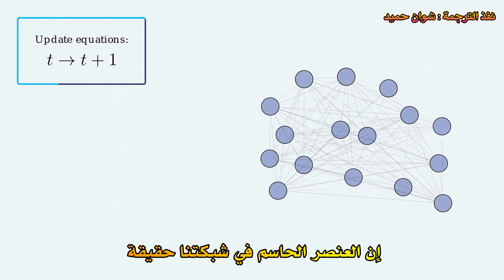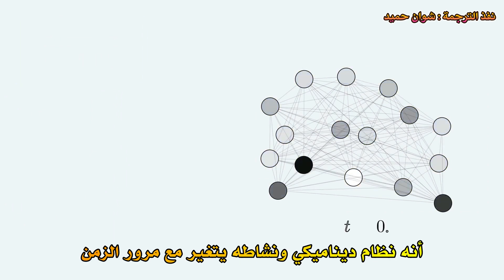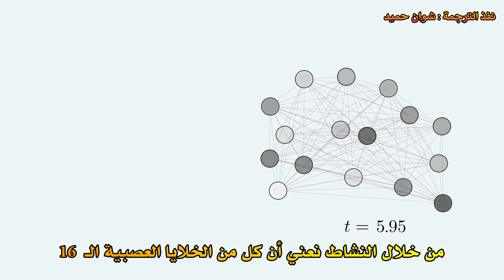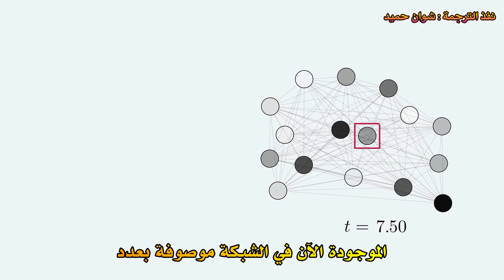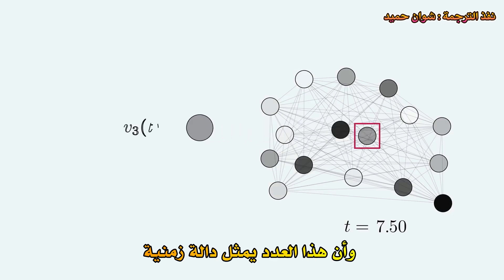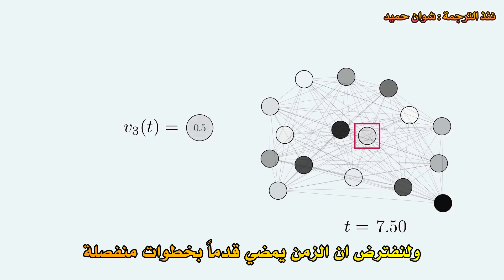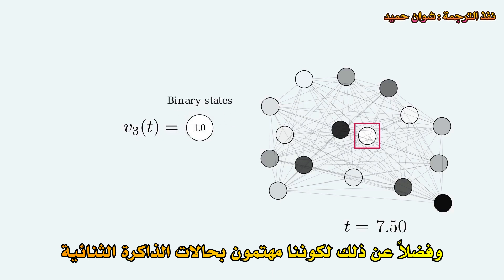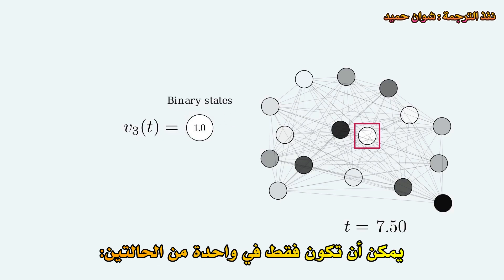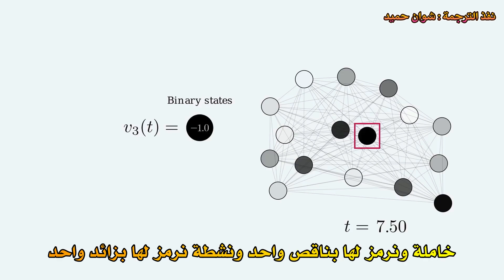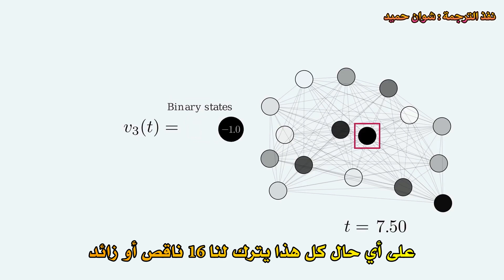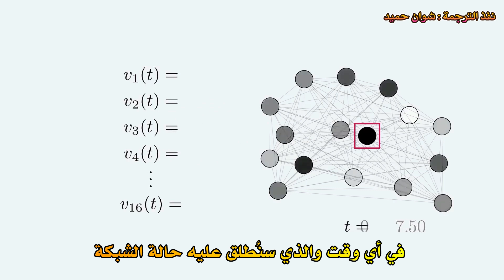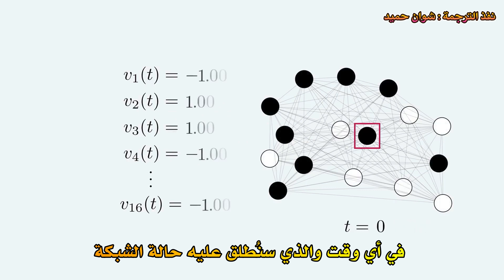The crucial ingredient of our network is the fact that it is a dynamical system — its activity changes over time. By activity, we mean that each of the now 16 neurons in the network is described by a number that is a function of time. Let's assume that time moves forward in discrete steps. Since we are interested in binary memory states, we'll assume that neurons can only be in one of two states: inactive, say minus one, and active, say plus one. This leaves us with 16 minus or plus ones at any given time, which we will call the state of the network.